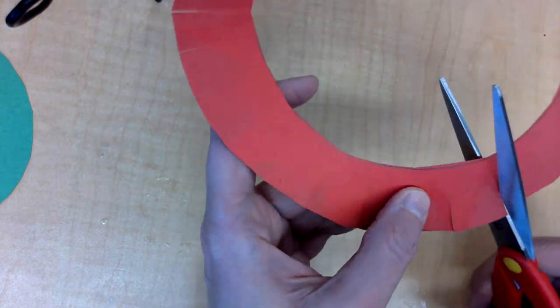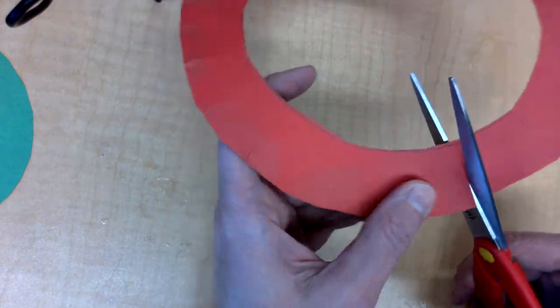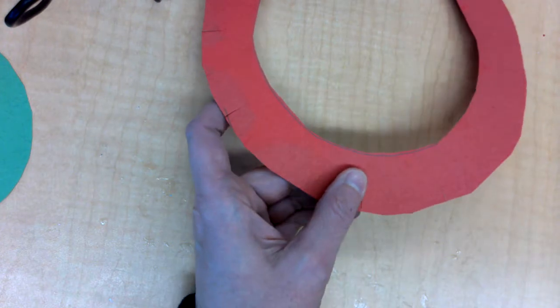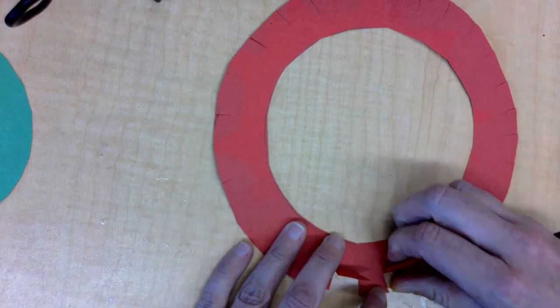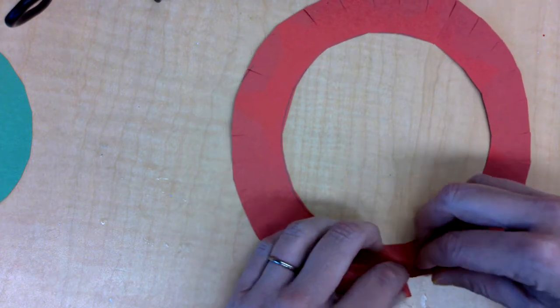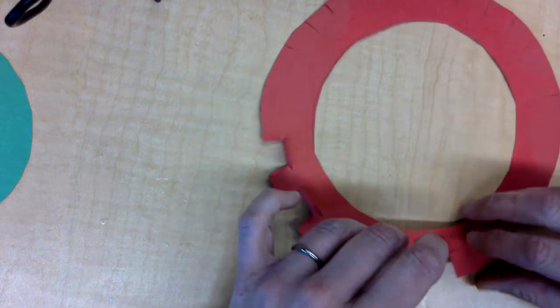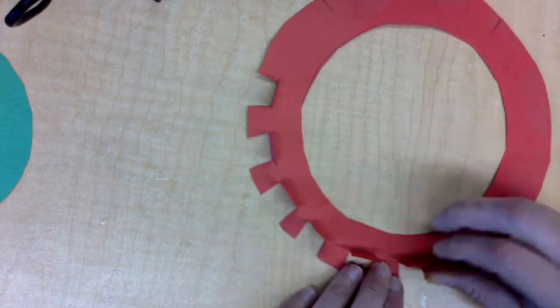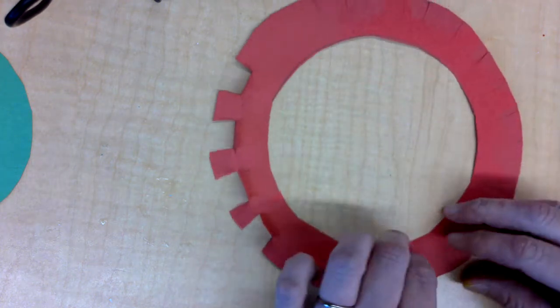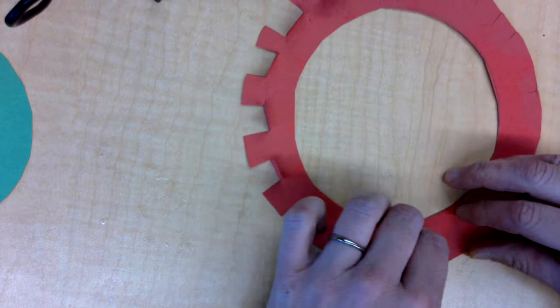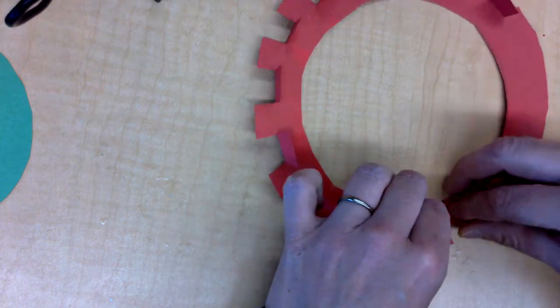You get all the way to the end, okay. And then you're just going to fold every other flap up, so now it has some three-dimensional aspect to it. It's not just flat paper.